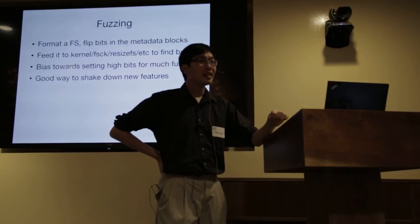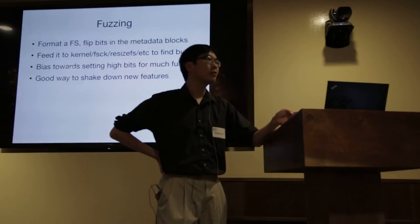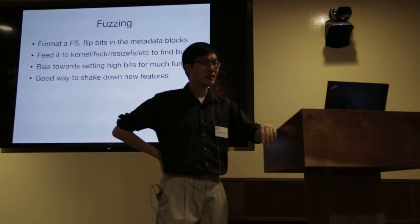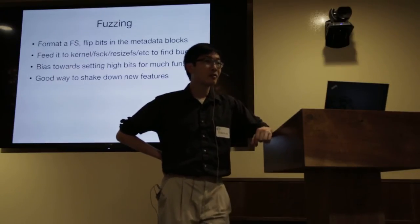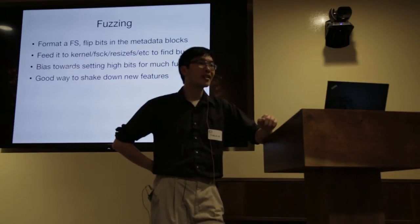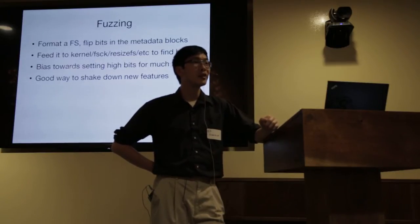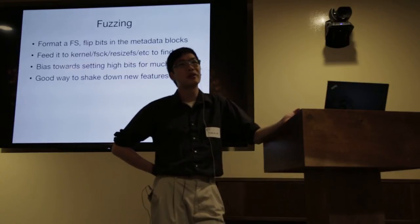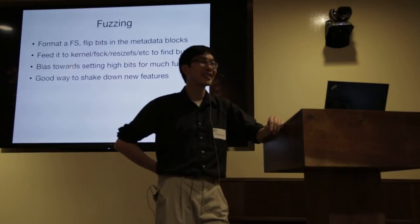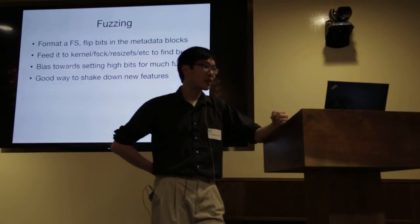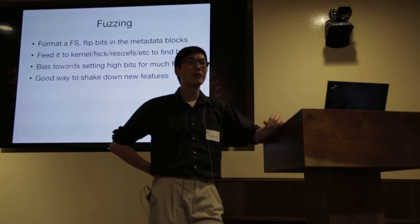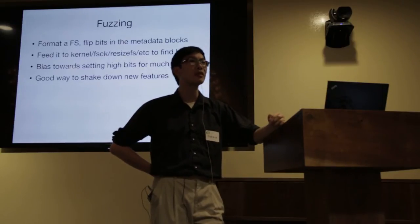I used this technique in the middle of the year to shake down both the new inline data feature of EXT4 and also metadata checksumming in both file systems. Basically what I did was set up a tight loop script which would mkfs a file system, copy some random data onto it, and then wrote an XFS fuzz and E2 fuzz program that would read the file system — assuming it's correct — figure out which blocks were specifically allocated towards metadata, and then pound on those blocks specifically. Neither XFS nor EXT4 actually have data block checksumming, so there's not really any point in corrupting data because the file system has no ability to detect that yet.